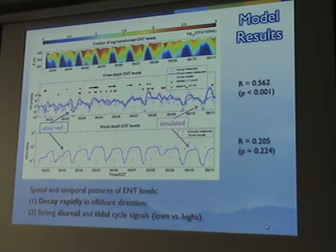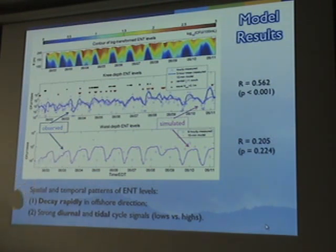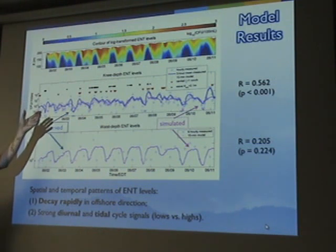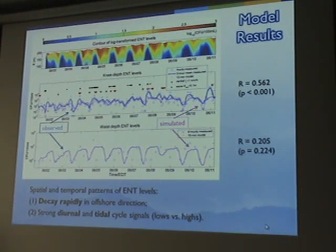Wave events are shown as crosses and rain events as red triangles. The model does a much better job at the knee-deep location than at the waist-deep location, partly because the number of observations at waist depth is very limited, making comparison more difficult given the high temporal variability. The behavior at waist depth is really controlled by cross-shore diffusion. From measurements and modeling we see a rapid decay in the offshore direction and strong diurnal and tidal cycles represented by the model.